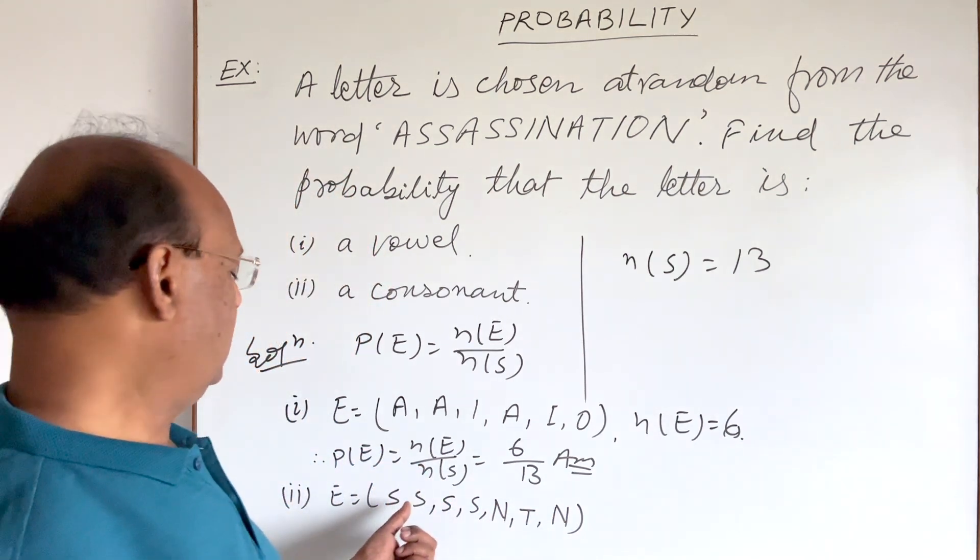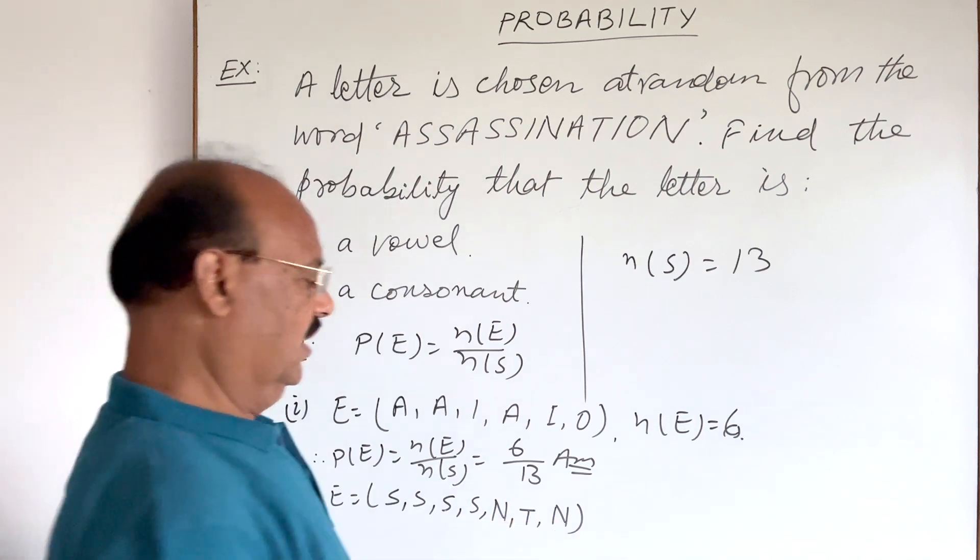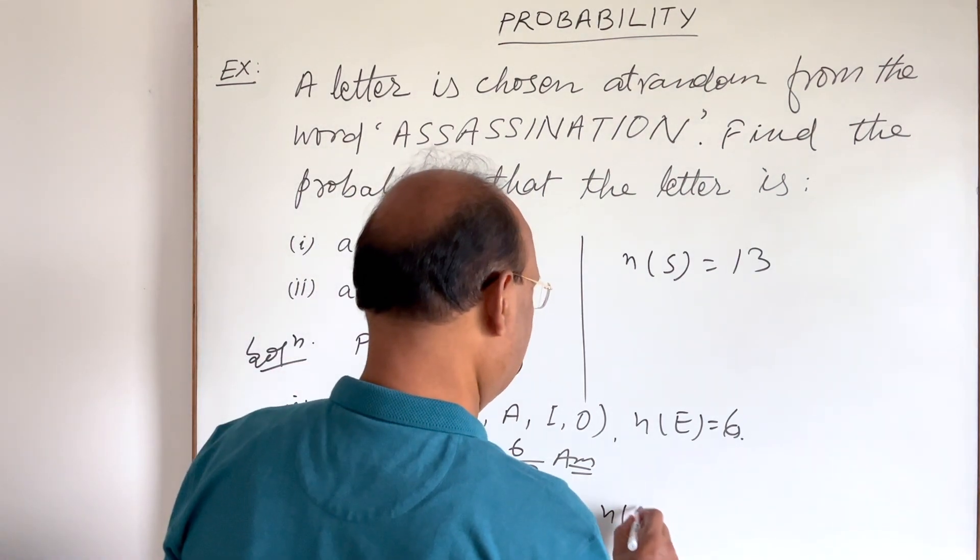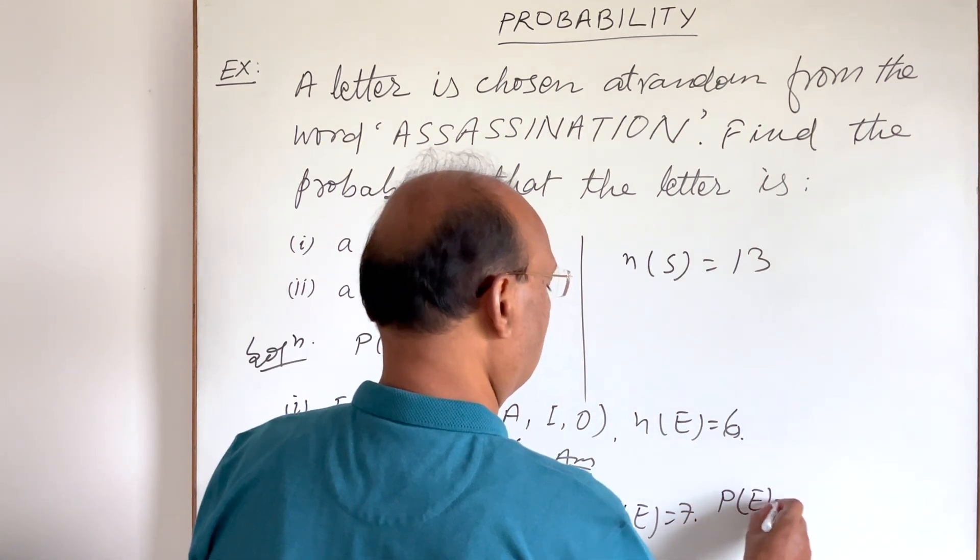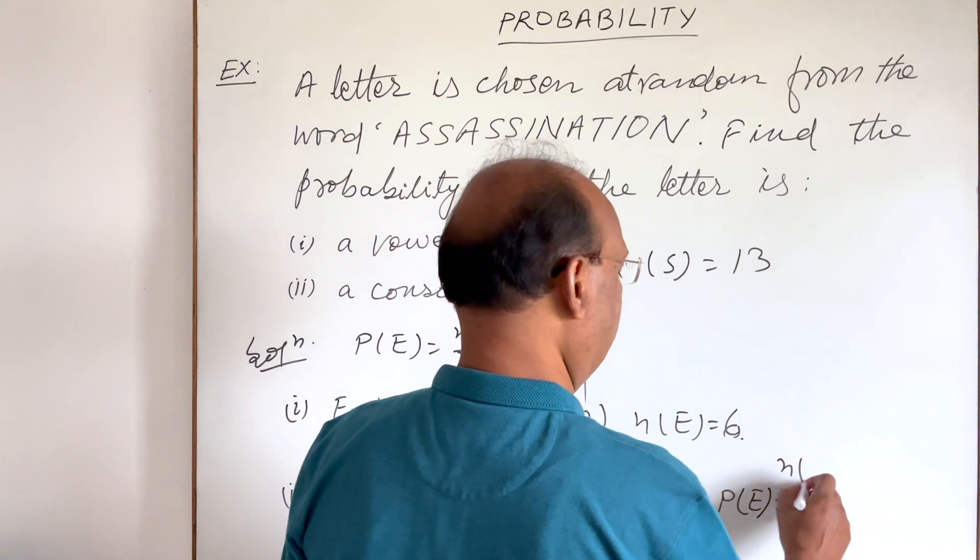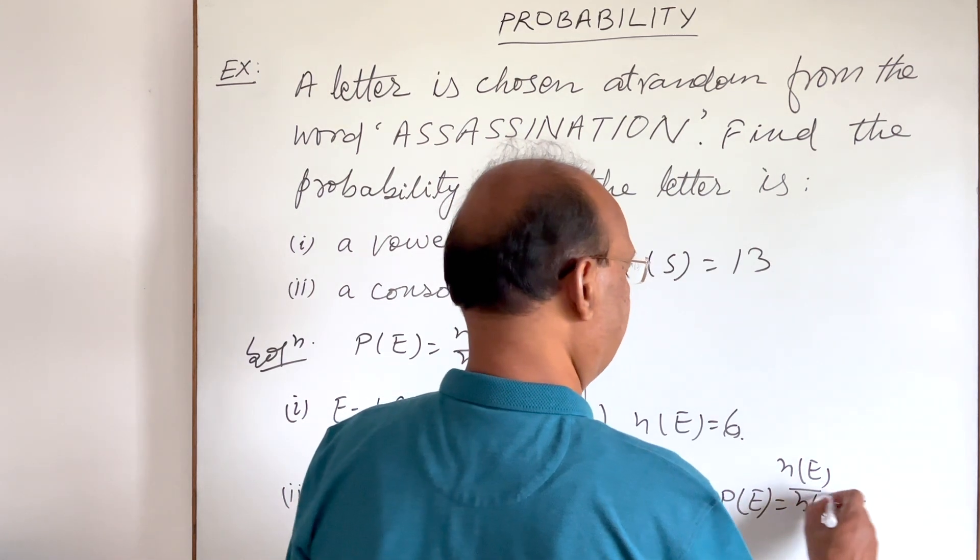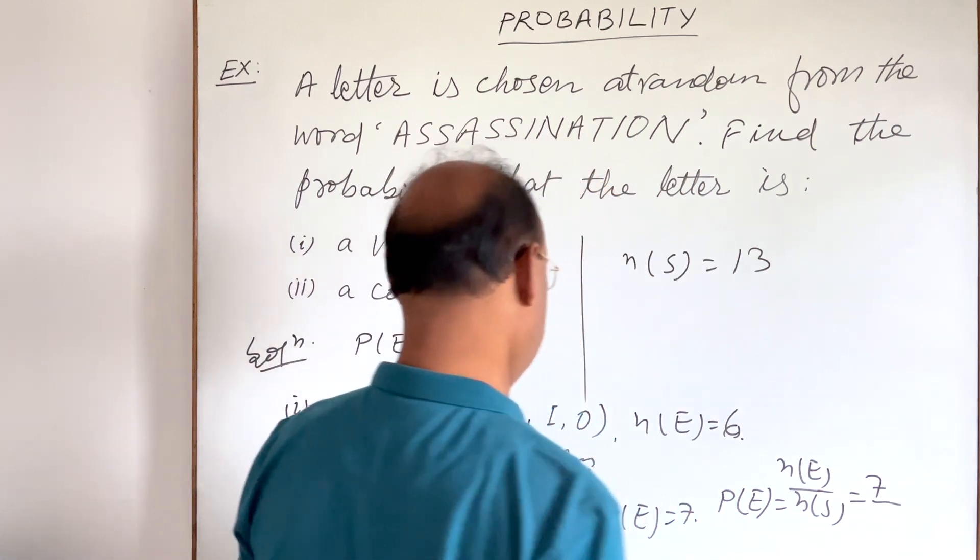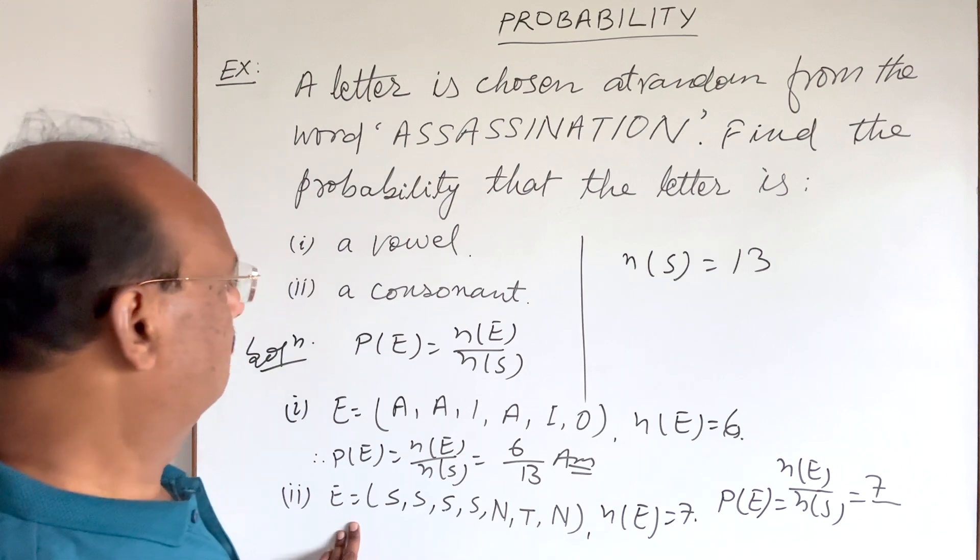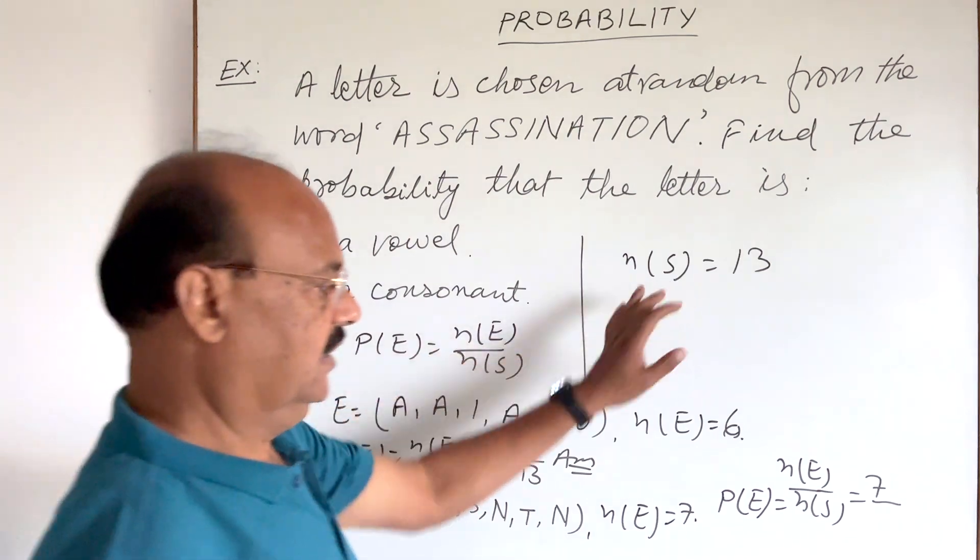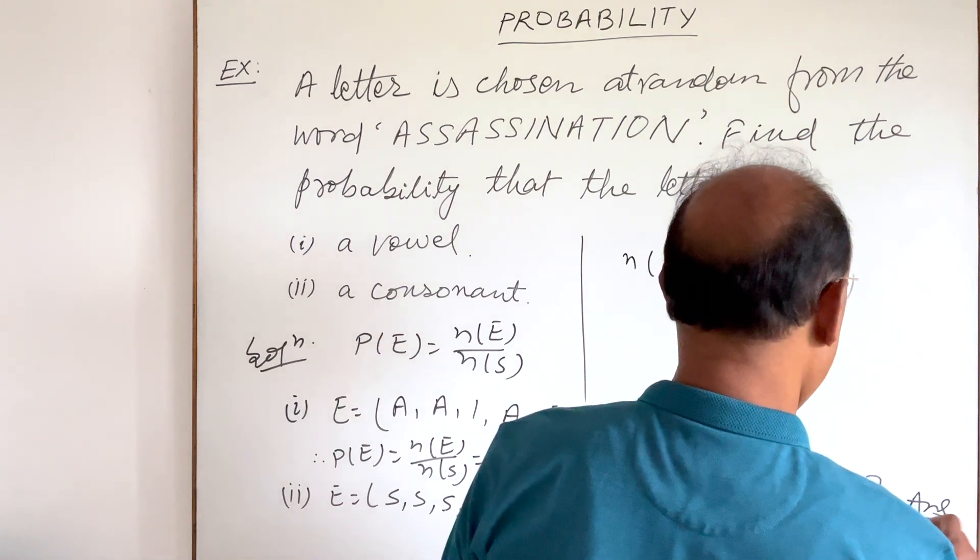Number of consonants: 1, 2, 3, 4, 5, 6, 7. It means n(E) is equal to 7. So probability of this event - the formula is n(E) divided by n(S). n(E) is 7 and n(S) is 13. This is the answer of the second part.